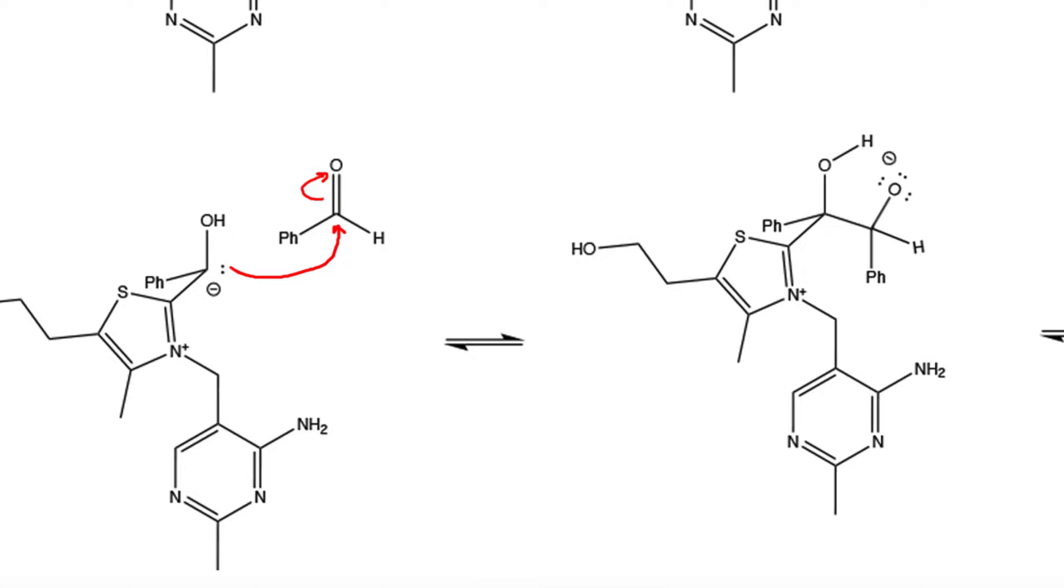This results in another alkoxide anion intermediate. Notice that this carbon and this carbon have now formed a bond with one another, so we've successfully linked the two benzaldehyde molecules.